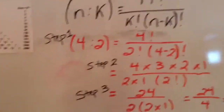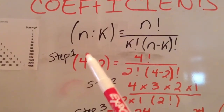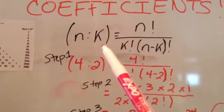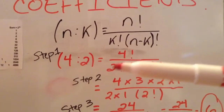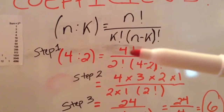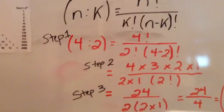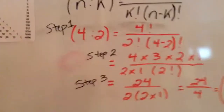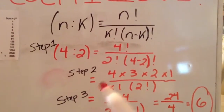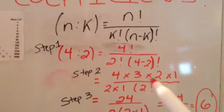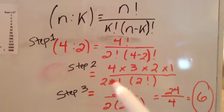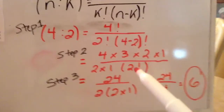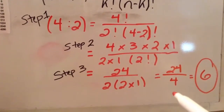Let's try to use the equation because we're not going to have easy numbers like this in the future, and the equation will really help. N will represent the number you went down from, which was 4, and k represents the number you went across, which will be 2. So we'll do 4 factorial over 2 factorial times the quantity 4 minus 2 factorial, which will equal 2 factorial. Using the factorial — meaning multiply descending natural numbers — we get 4 times 3 times 2 times 1 over 2 times 1 times 2 times 1. Our answer turns out to be 24 over 4, which equals 6.